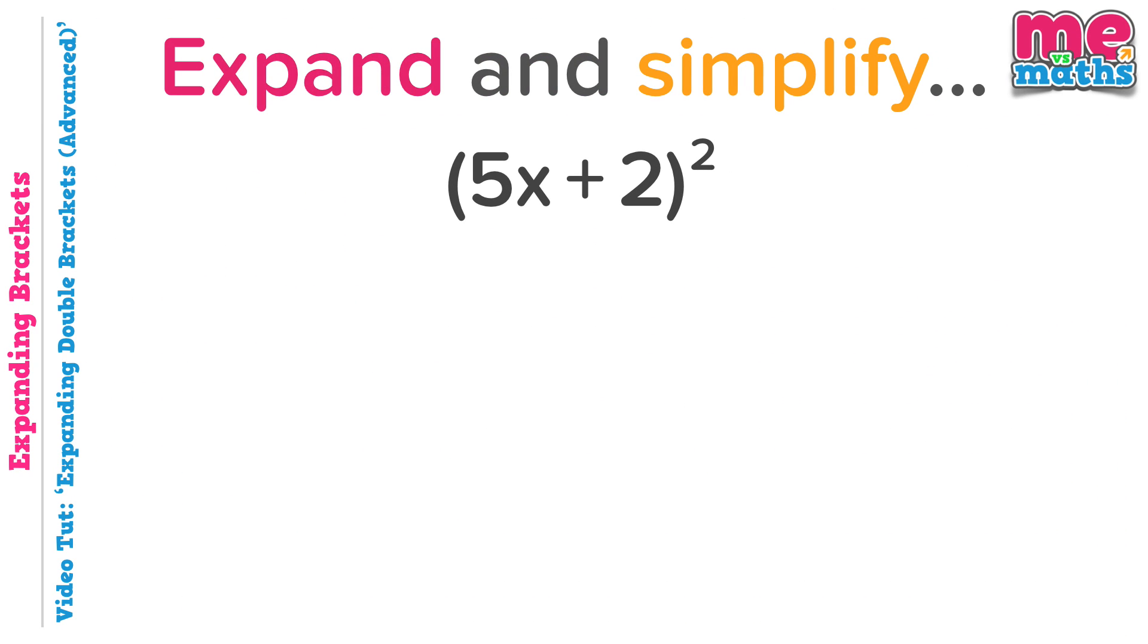This is it then, our last problem. Again, we've seen similar in previous tutorials. The squared sign here shows we're multiplying 5x plus 2 by itself. So to avoid any mistakes, it's best to write it out twice, like so.